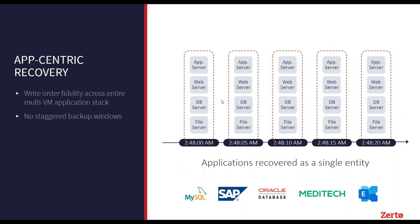Creating thousands of recovery points a day and recovering them quickly is important. But within the context of migrations, how we treat applications is crucial. Rather than backing up and recovering on a per-VM basis, Zerto uses virtual protection groups. You allocate all the VMs that belong to your enterprise application, and Zerto protects and replicates them at exact checkpoints — consistently with write-order fidelity across the entire multi-VM application stack. No more staggered backup windows or days and weeks of RTOs rebuilding file directories.